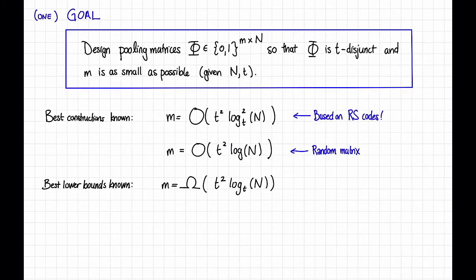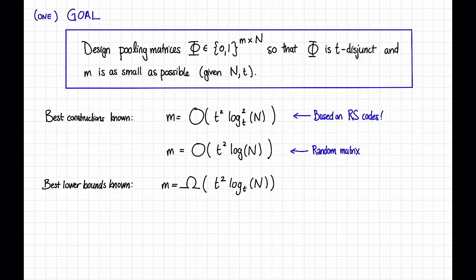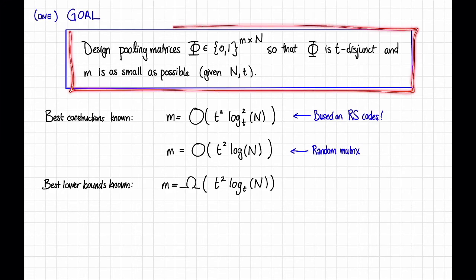This inspires a new goal for us, at least with respect to group testing. Our goal is now to design pooling matrices φ that are t-disjunct, and so that m, the number of tests, is as small as possible given capital N, the number of people, and t, the number of sick people. This is just one goal, just like encoding theory, there are many different goals in group testing, but this is a reasonable one to think about for now. And in fact, lots of people have thought about it.